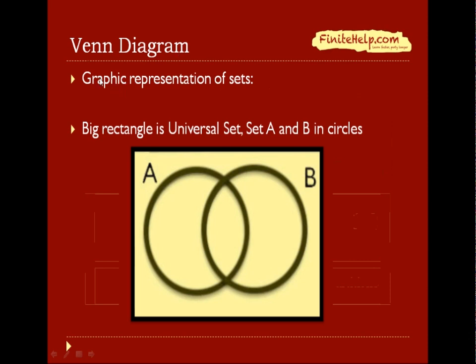A Venn diagram is the graphic representation of sets. Here we can have an example of a Venn diagram. The big rectangle represents the universal set, and here's set A and set B represented by circles.